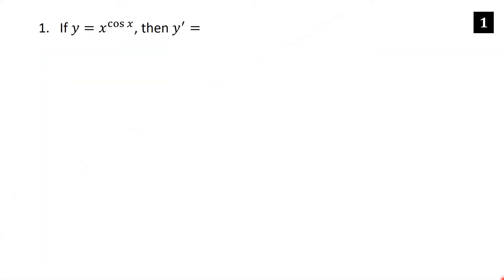If y equals x to the cosine x, then y prime equals — and we're going to do this by logarithmic differentiation. Starting with y equals x to the cosine x, I'm going to go ahead and take the natural logarithm of each side, so we get ln y equals ln of x to the cosine x. Using the rule for logarithms that says you can take the exponent and bring it out front, we get that this equals cosine x times ln x.